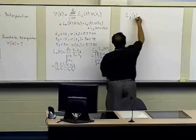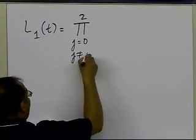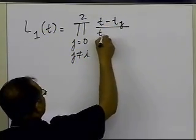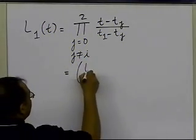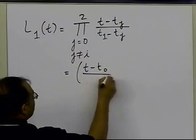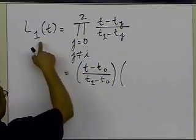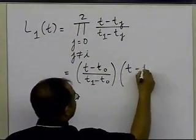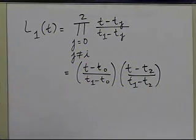L1(t) is the product from j=0 to 2, j≠1, of (t − t_j)/(t1 − t_j). The j=1 term is skipped because j cannot equal i. So we write the terms for j=0 and j=2: L1(t) = [(t − t0)(t − t2)] / [(t1 − t0)(t1 − t2)].